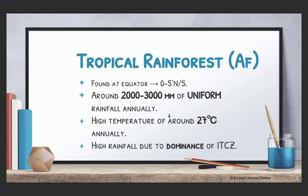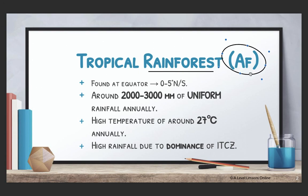The first tropical climate we're going to look at is the tropical rainforest, otherwise known as the AF climate. It's good to know this term because you can use it as shorthand in your essays or when you come across a climograph. Your tropical rainforest, the AF climate, is found generally at the equator, between 0 to 5 degrees north or south.